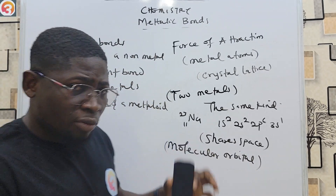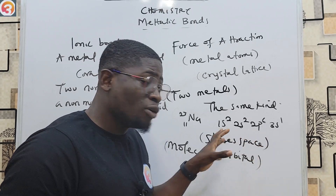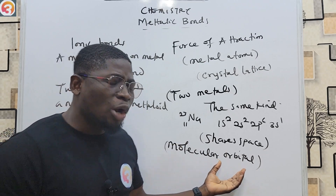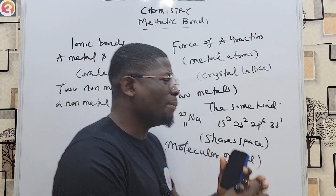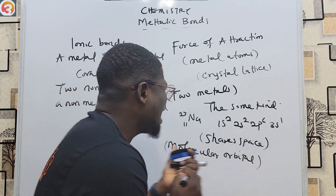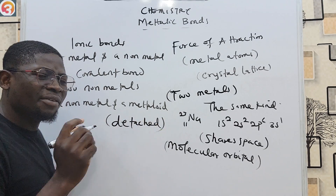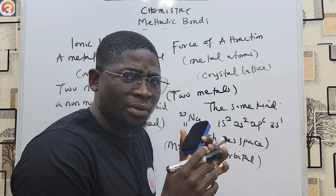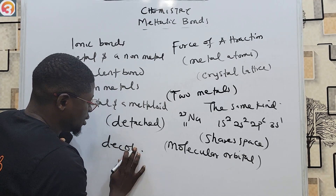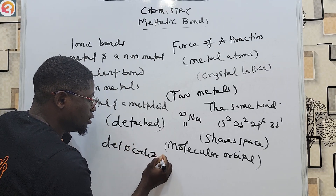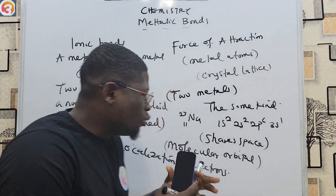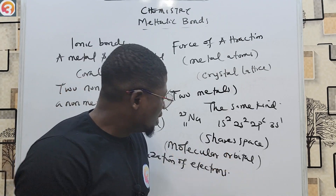When sodium atoms come together, the electrons in the 3s orbital of one sodium atom share space with a corresponding electron in the neighboring atom to form a molecular orbital. Once this molecular orbital is formed, the electrons are free to move about. Each electron becomes detached from its parent atom — this is what we call the delocalization of electrons.